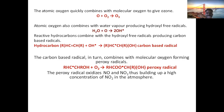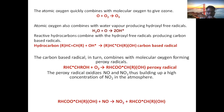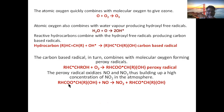Again, this peroxy radical oxidizes nitric oxide to nitrogen dioxide, thus building up a high concentration of NO2 in the atmosphere by the following equation. The peroxy radical reacts with nitric oxide and converts it into nitrogen dioxide, building up a high concentration of nitrogen dioxide in the atmosphere.